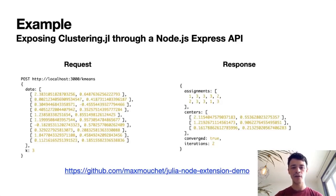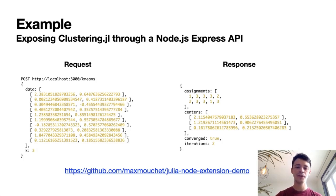I've put an example extension on GitHub, which is a Node.js Express API that exposes the k-means function from the clustering.jl package. It includes everything from building the system image to building and packaging the extension, so feel free to have a look for a complete overview.